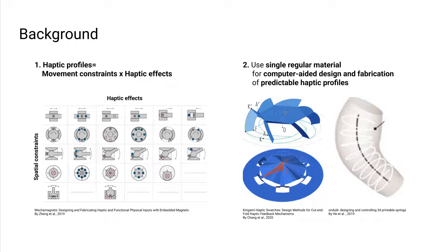Second, using computer-aided design and fabrication and single ordinary material to generate predictable haptic profiles. For instance, Kirigami haptic swatches leverage laser-cutting plastic sheets and various cut-and-fold structures, and Andulé employs 3D-printing PLA and coil-spring structures. They also provide computer-aided design tools assisting users to design the structures with desired haptic profiles, based on mathematical models of the structures.